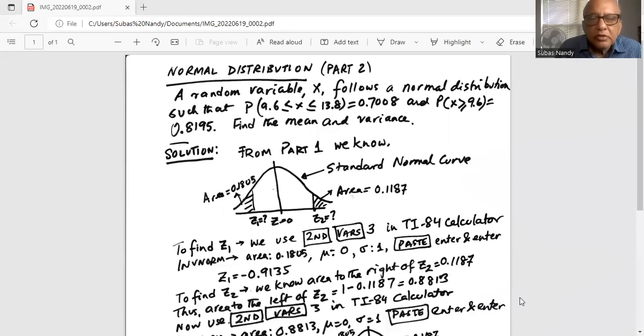So a normal variable x follows a normal distribution such that probability of x between 9.6 and 13.8 inclusive is 0.7008 and probability of x greater or equal to 9.6 is equal to 0.8195. Find the mean and the variance.